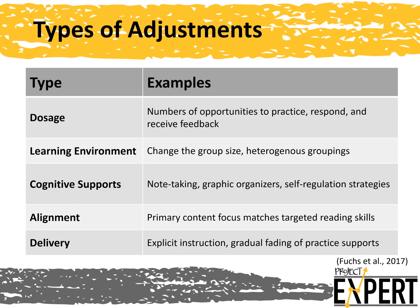We will show you five key ways to intensify instruction according to the taxonomy of intervention intensity. The types of adjustment include: dosage — increasing the number of opportunities to practice, respond, and receive feedback; learning environment — changing the group size or heterogeneous groupings; cognitive supports — including note-taking, graphic organizers, or self-regulation strategies; alignment — ensuring that the primary content focus matches your targeted reading skills; and delivery — providing explicit instruction or gradual fading of practice supports.